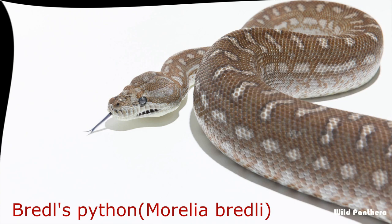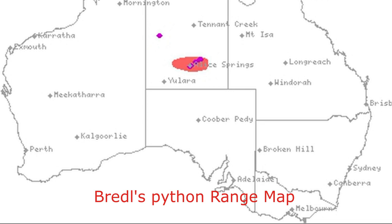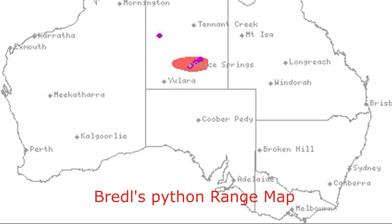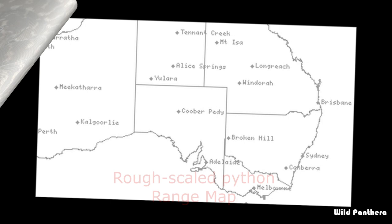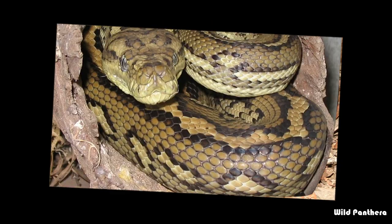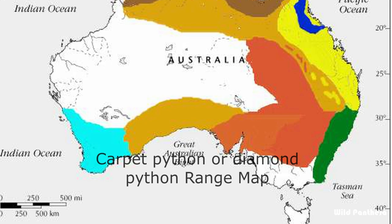Beedle's Python: This is a non-venomous python species found in Australia. No subspecies are currently recognized. Rough-scaled Python: Morelia carinata, commonly known as the Rough-scaled Python, is a large python species endemic to Australia. Carpet Python or Diamond Python: The Carpet Python or Diamond Python is a large snake of the family Pythonidae, found in Australia, New Guinea, the Bismarck Archipelago,